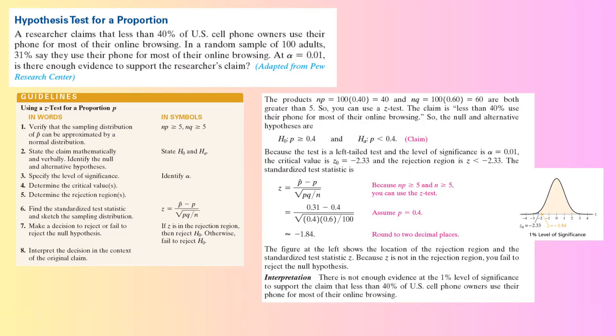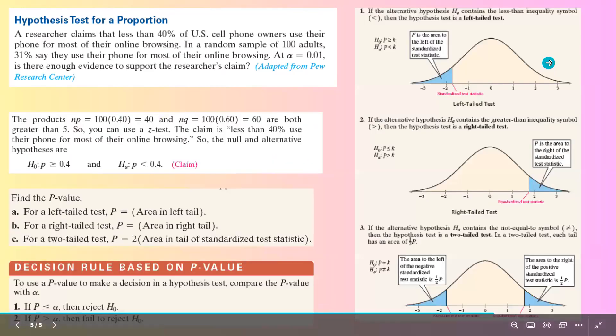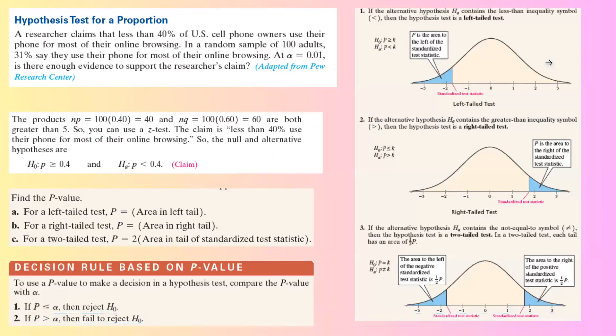Now, some of you might say, why don't we use p-value? Let me show you how to use p-value to do the computation. First of all, the very first steps are the same. You check to see if NP is more than or equals to 5, NQ is more than equals to 5, and then you identify the null and alternative hypothesis.